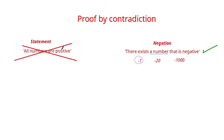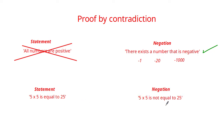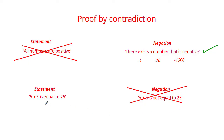That was much quicker than it would have taken to disprove the statement using the statement itself. Here's another example: '5 times 5 is equal to 25.' The negation is that 5 times 5 is not equal to 25. In this case the negation is clearly not correct — there is no case where 5 times 5 is not equal to 25 — so the negation is false, and therefore the original statement is proven.